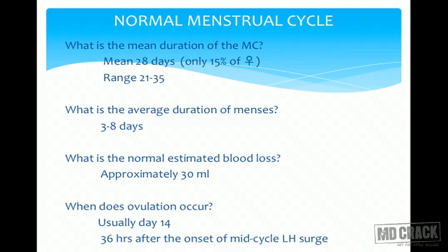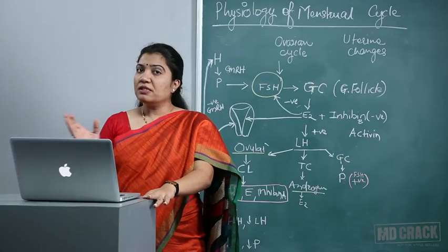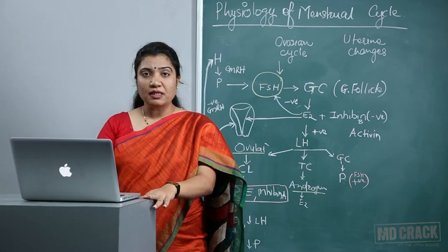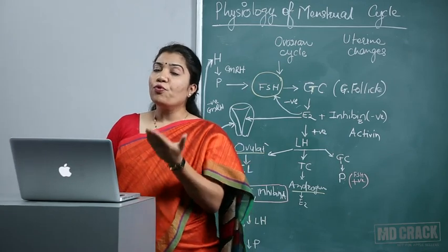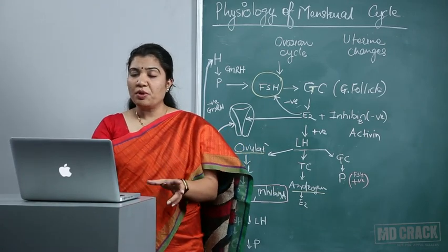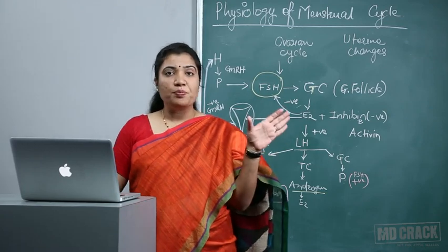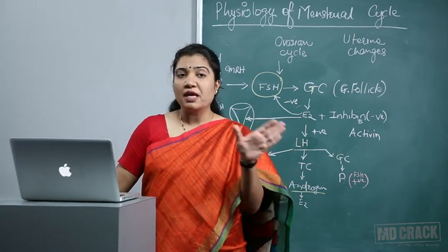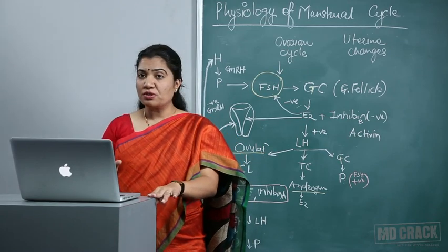Ovulation usually occurs on day 14 of a regular 28-day cycle — 32 to 36 hours after the mid-cycle LH surge onset, and 10 to 12 hours before or after the LH peak. If cycles are irregular, ovulation occurs 14 days before the first day of menses. Always remember: the proliferative or follicular phase can vary, but the luteal phase remains constant at almost 14 days.